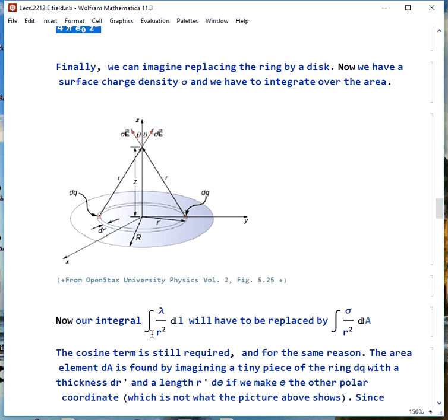Now, the integral of lambda dl over r becomes the integral of sigma dA over r squared. We still need the cosine term, and we need it for the same reason. The area element dA, we find this by imagining a tiny little piece of the ring dq with the thickness dr prime, that's radial, and a length r prime d theta, because theta is the other polar coordinate. They are not using that here, but that's what we'll use.